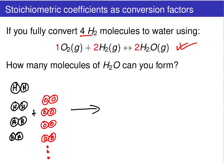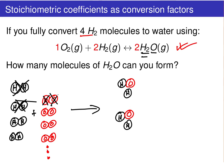The first water molecule that's formed is going to use up one oxygen atom and two hydrogen atoms, giving us a water molecule. So we've formed our first water molecule using up one of our H2s. We can do this process again, using up another pair of hydrogen atoms and another oxygen atom to form our second water molecule. At this point, you can see that we'll do this process two more times, and we'll end up with a total of four water molecules.